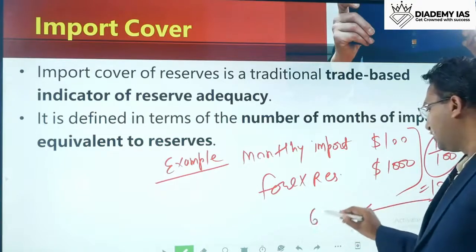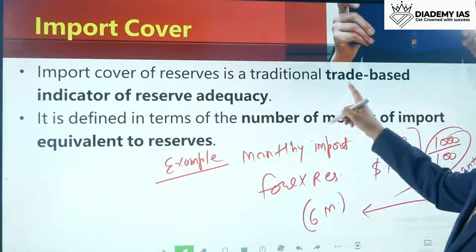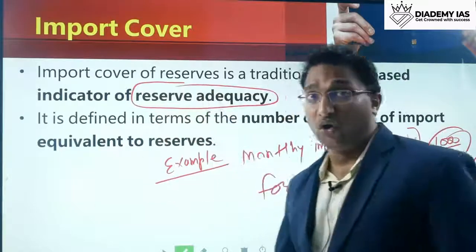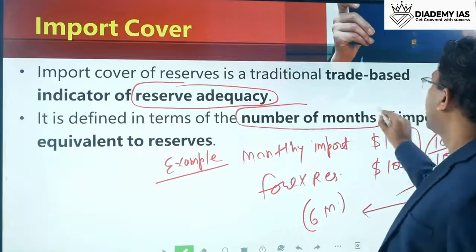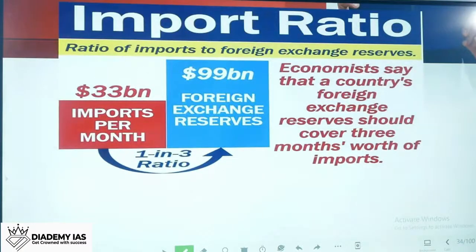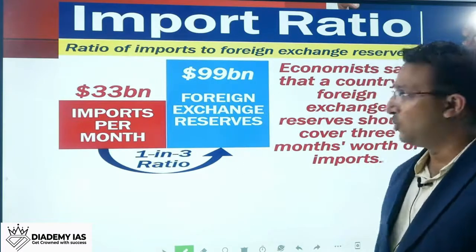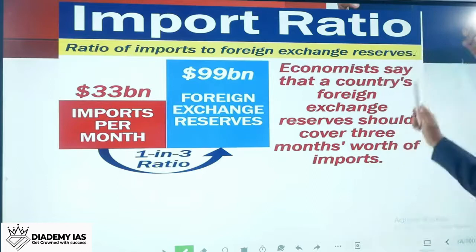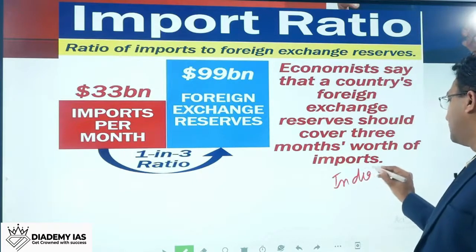The ideal import cover is six months, meaning we should have foreign exchange reserves equivalent to six months of imports. Import cover is a traditional trade-balanced indicator of reserve adequacy — it checks whether foreign exchange reserves are adequate. It is defined in terms of the number of months of imports equivalent to reserves. Internationally, economists say reserves should cover three months of imports; in India, we follow a six-month standard by tradition.